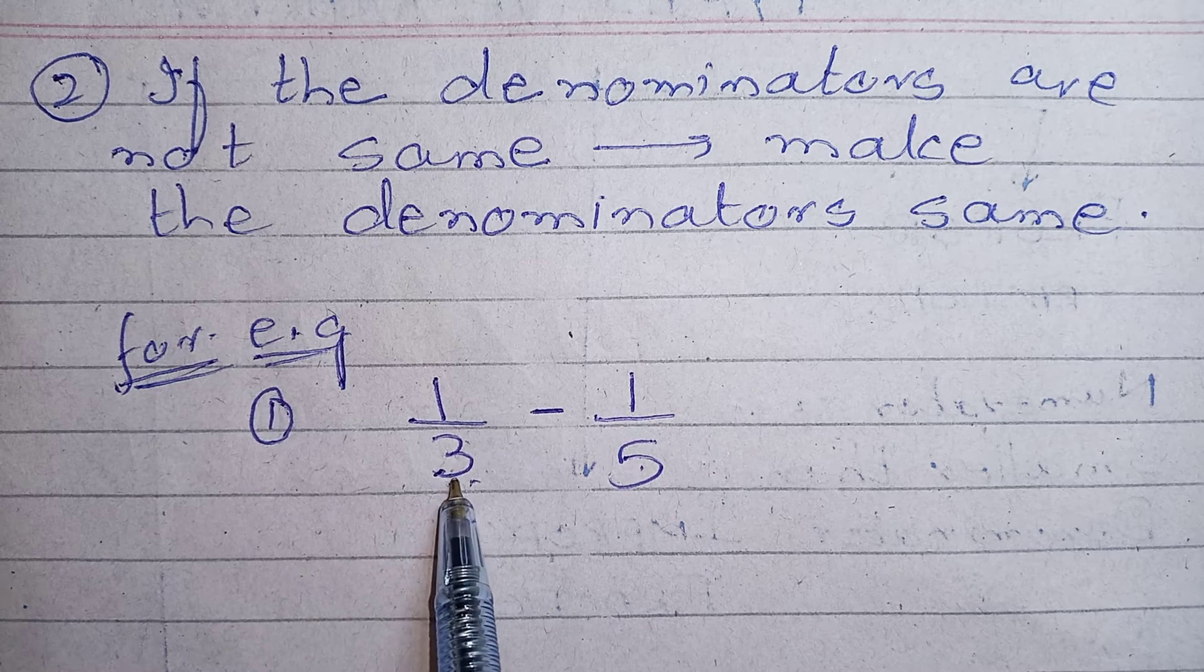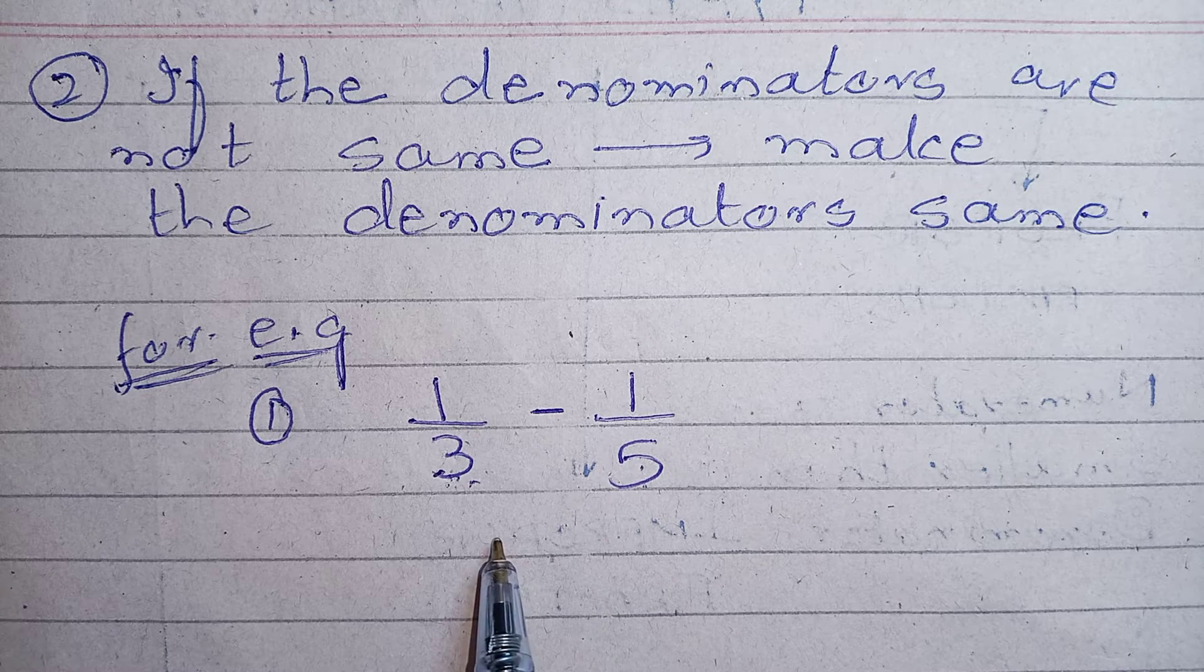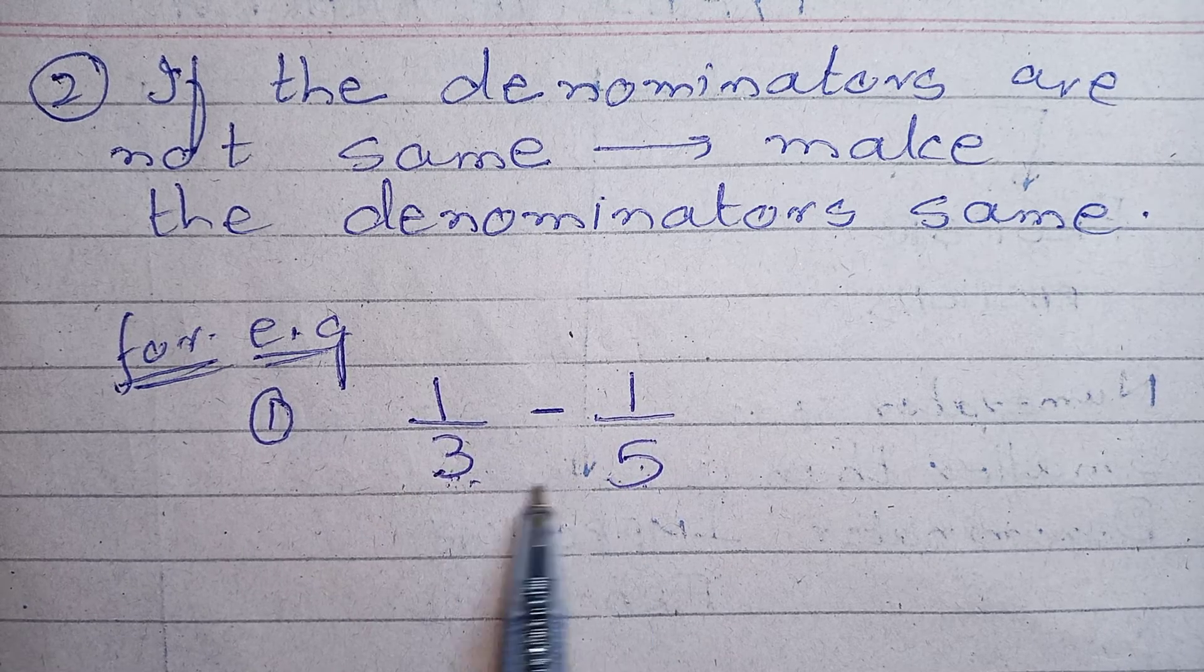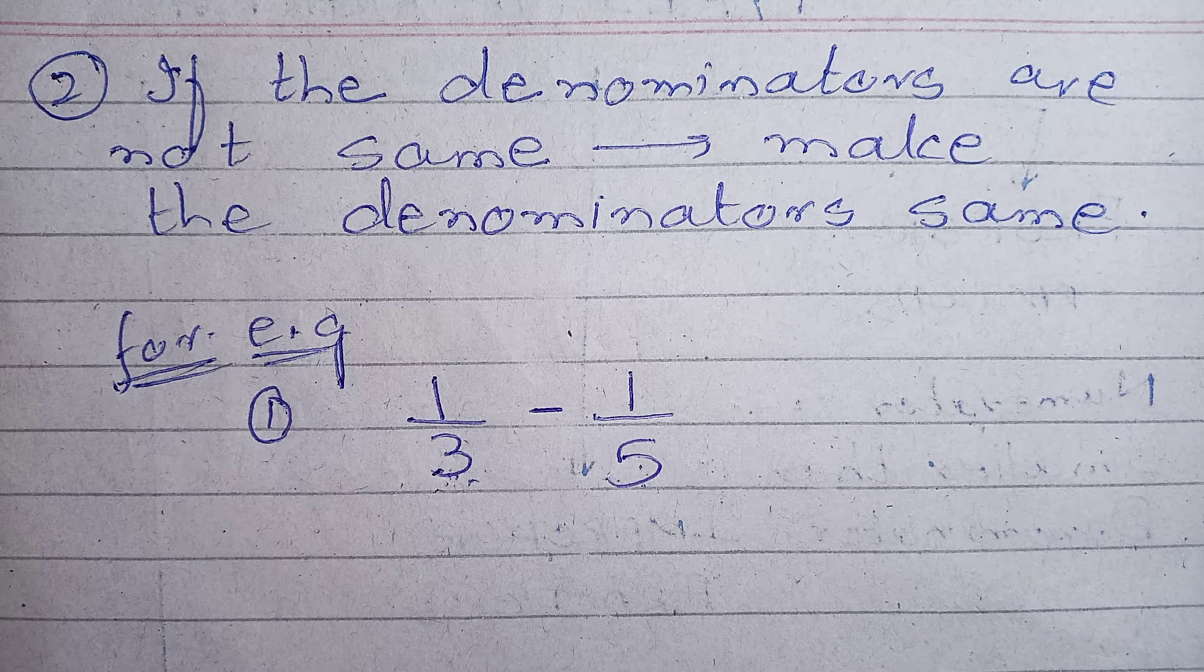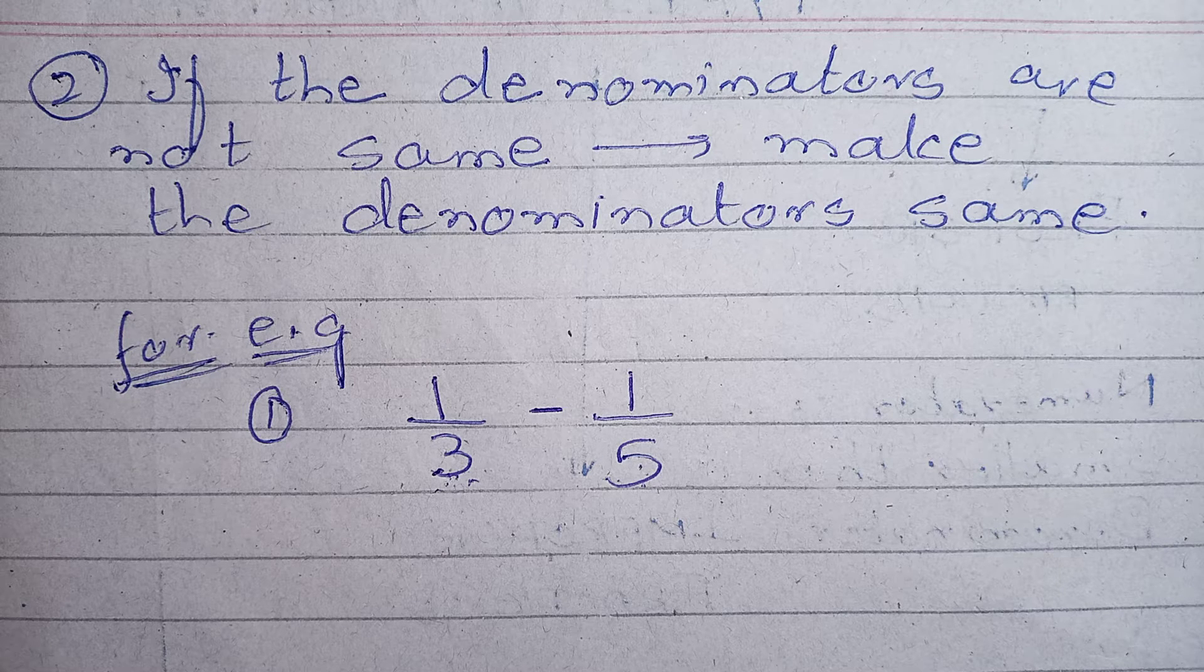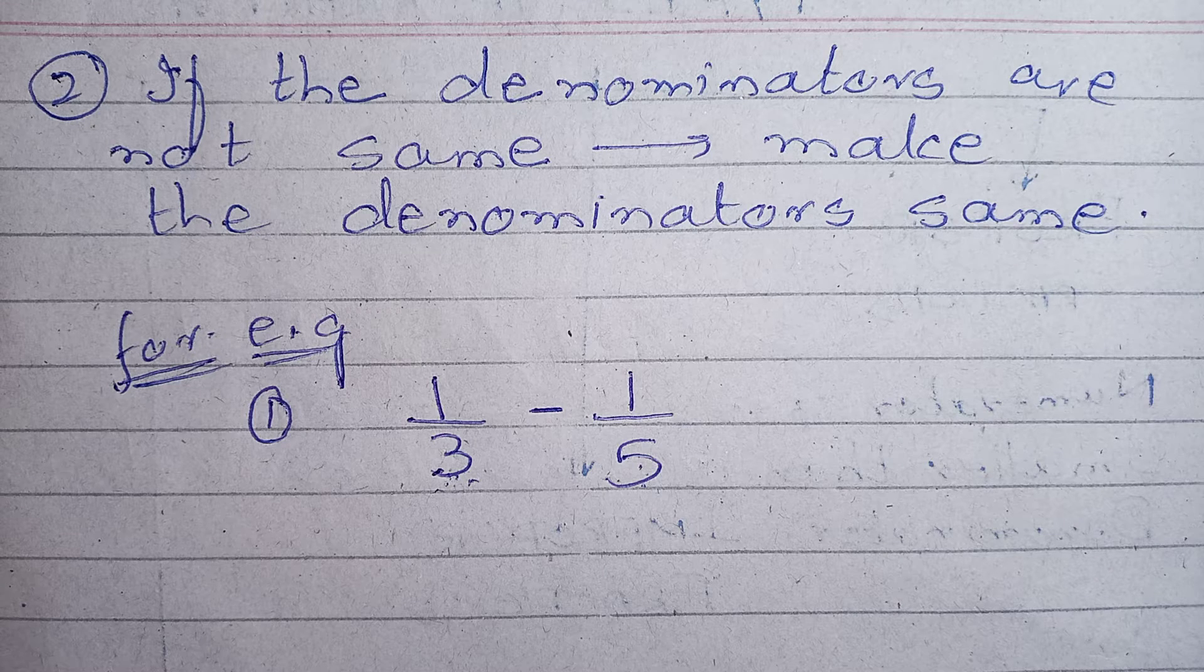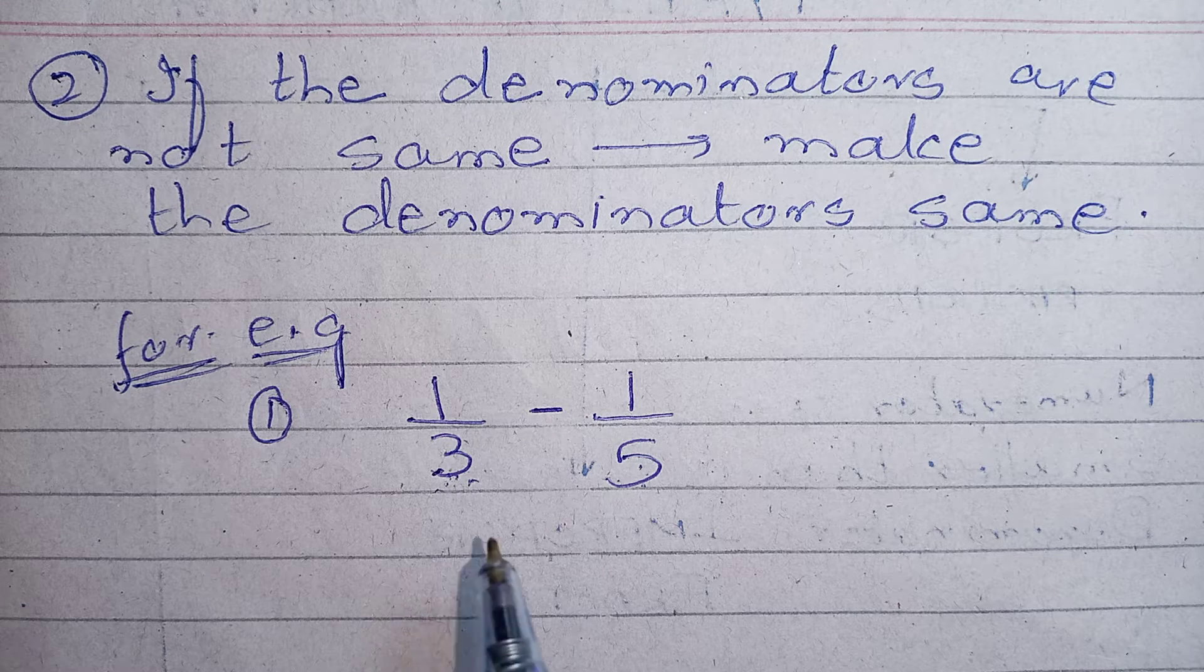If you remember in the last video we discussed how to keep the denominator same. We have to search in the tables of 3 and 5 such number that occurs in both the tables, common to both. And if you have more than one common numbers, we have to choose the least common, the number which is appearing first in the table.